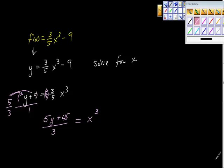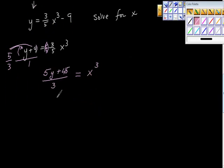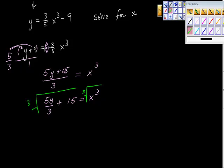This is going to be simplified, I think. I'm going to break this up and I'm going to say 5y over 3 plus 45 over 3 is 15, is equal to x cubed. I'm still solving for x. This has really turned into something, hasn't it? So take the cube root of both sides.